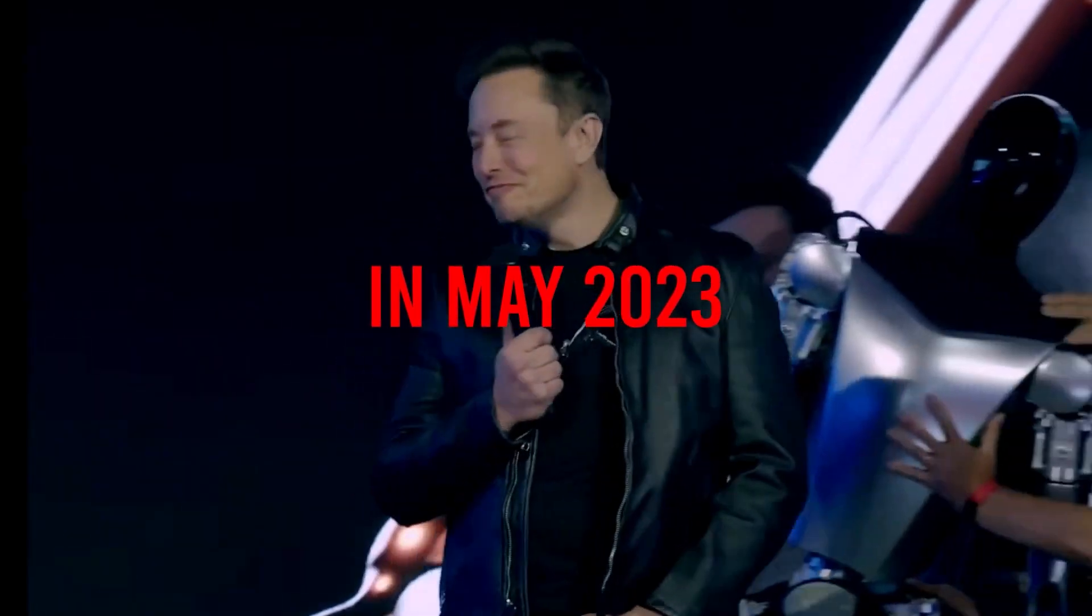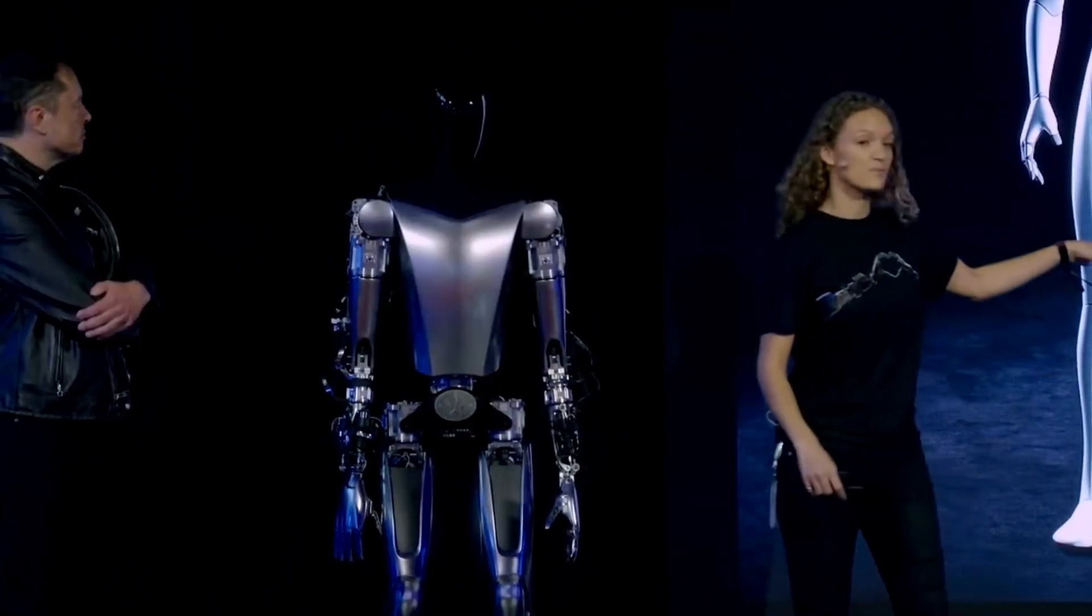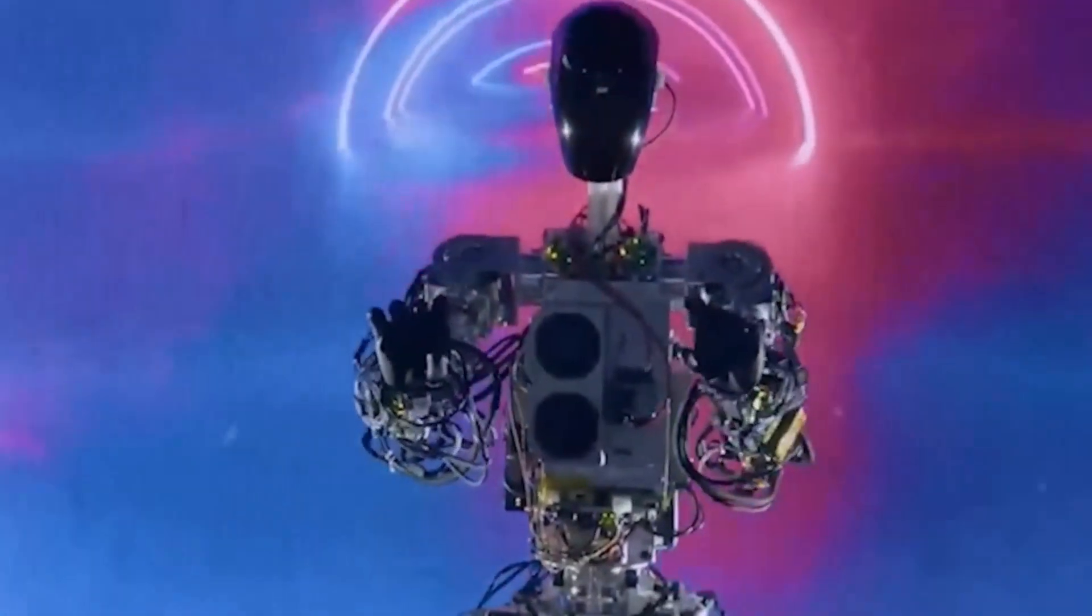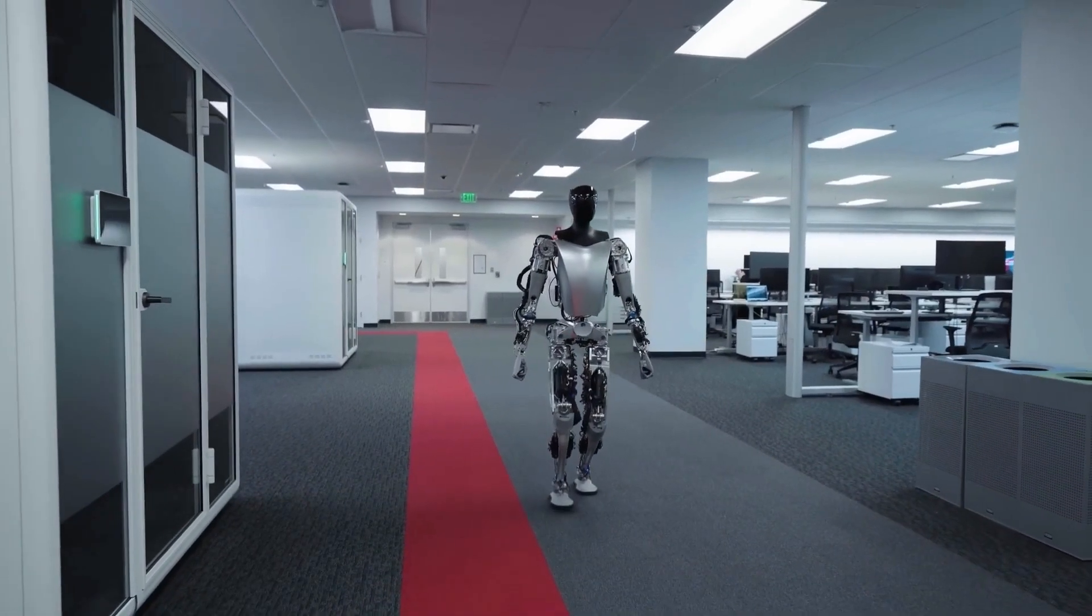In May 2023, Tesla displayed semi-functional prototypes of Optimus at its second AI Day event. One prototype was able to walk about the stage, and another, sleeker version, could move its arms forward.